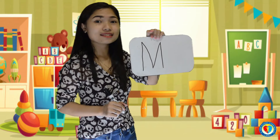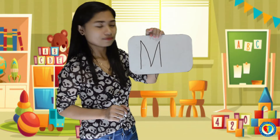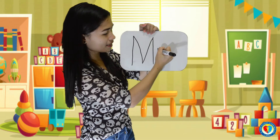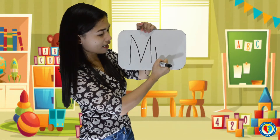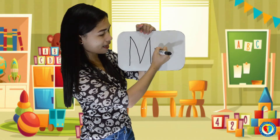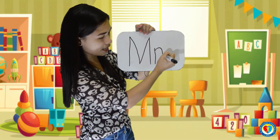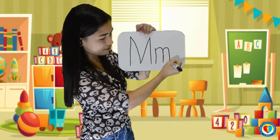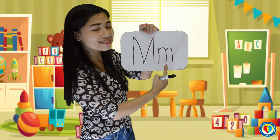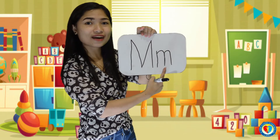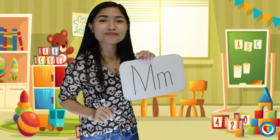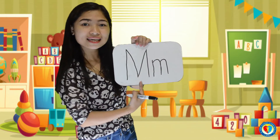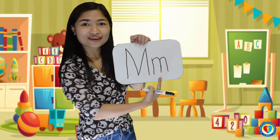Now, let's try to write the small M. Let's start from the middle. Make a straight line down and go back to the top and make a curve down to the bottom and another curve down to the bottom. This is the small letter M. Good job, kids! Now you know how to write the big and the small letter M.